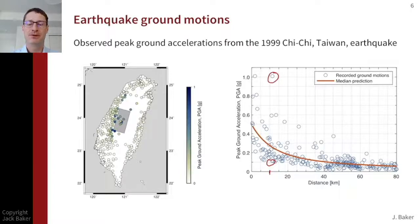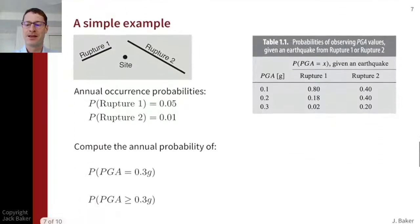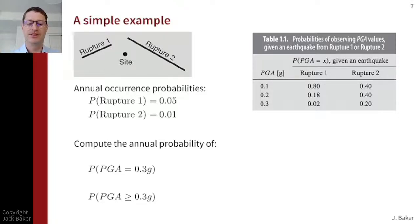If we put together the earthquake source model with the ground motion model, we can ask how often could all these different earthquakes occur nearby our site, and then the ground motion modeling tells us how strong the shaking could be from those different ruptures. We'll put those together to make inferences about ground motion occurrences. Let's do a very simple example to think about the mechanics of how that comes together. I've simplified away many things that would need to be considered in a more realistic calculation, but it'll give us a good idea of the ingredients of a seismic hazard analysis calculation.